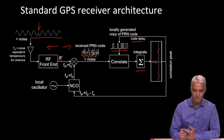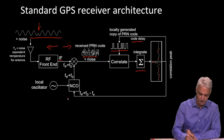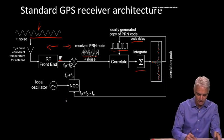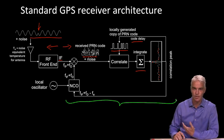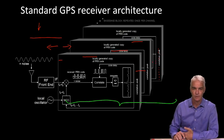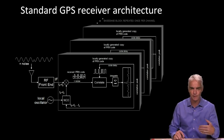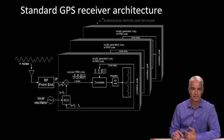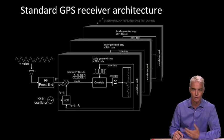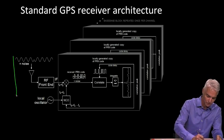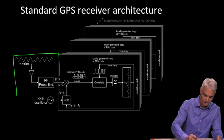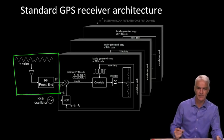That's the basic architecture, with one modification: all of this part — the mixer, correlator, and integration stage — is usually replicated many times, once for each channel of the receiver. Each channel is dedicated to one particular satellite. So instead of a single chain, you have one front end feeding multiple parallel channels, with one PRN code dedicated to each satellite you're looking for, allowing the receiver to track many satellites in parallel.